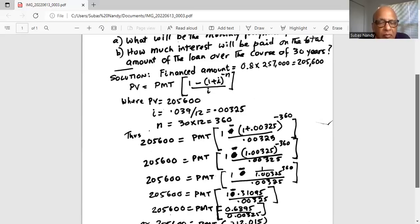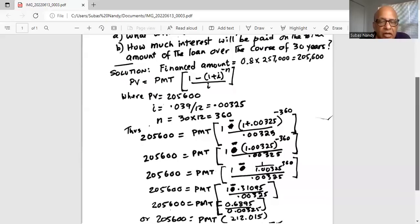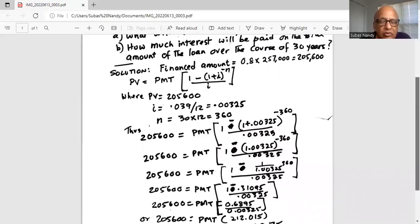So in the numerator, we have 1 minus 0.31095 divided by the interest rate, which is 0.00325.